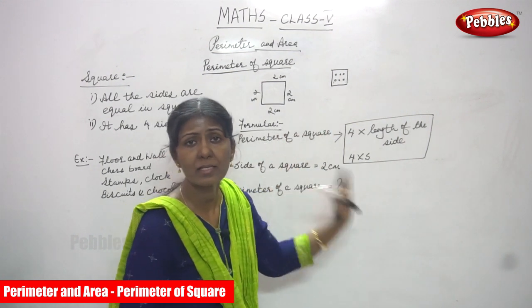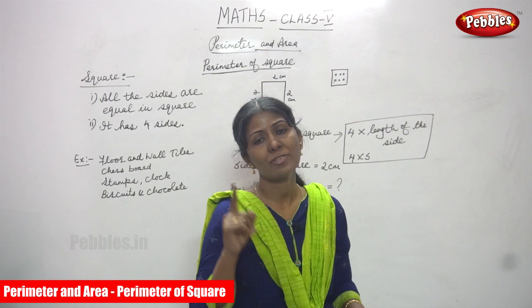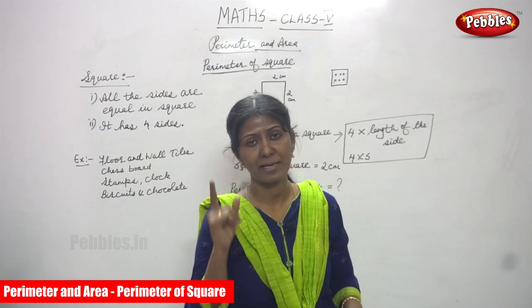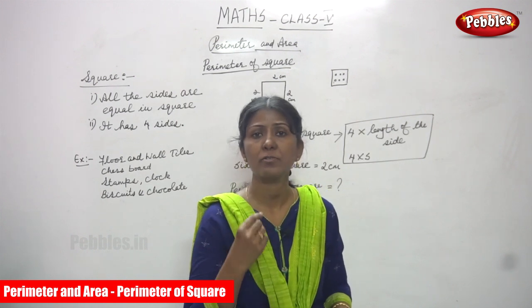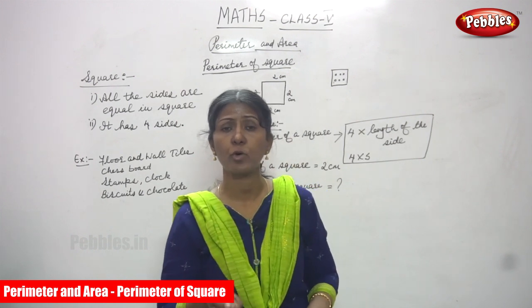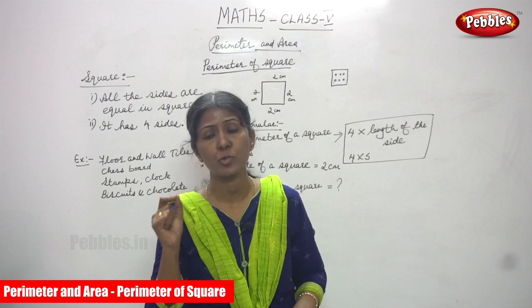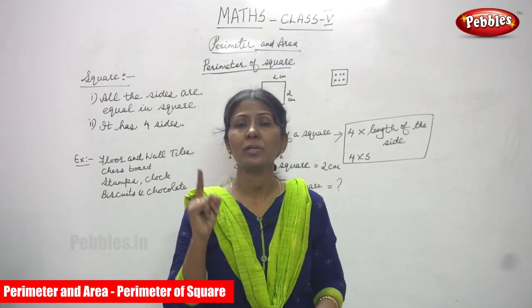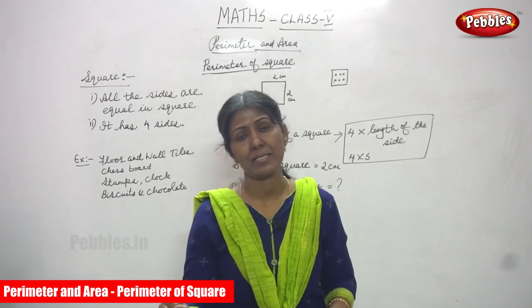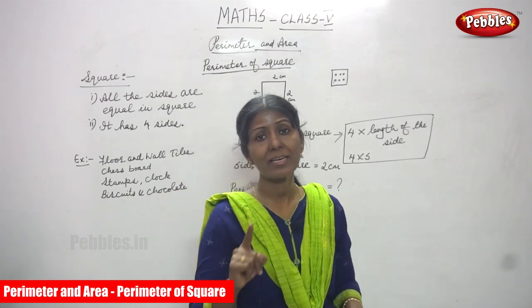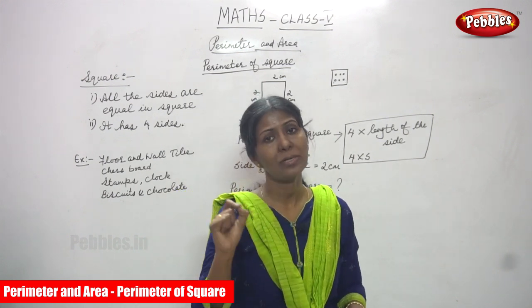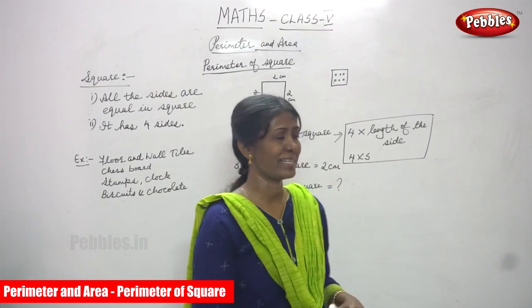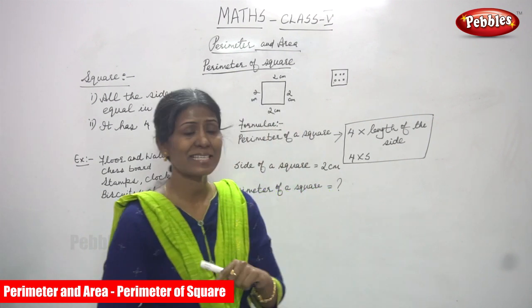Perimeter of a square is 4 into S. The formula is 4 into length of the side, or simply 4 into S — where S means side. Don't forget: 4 into S.